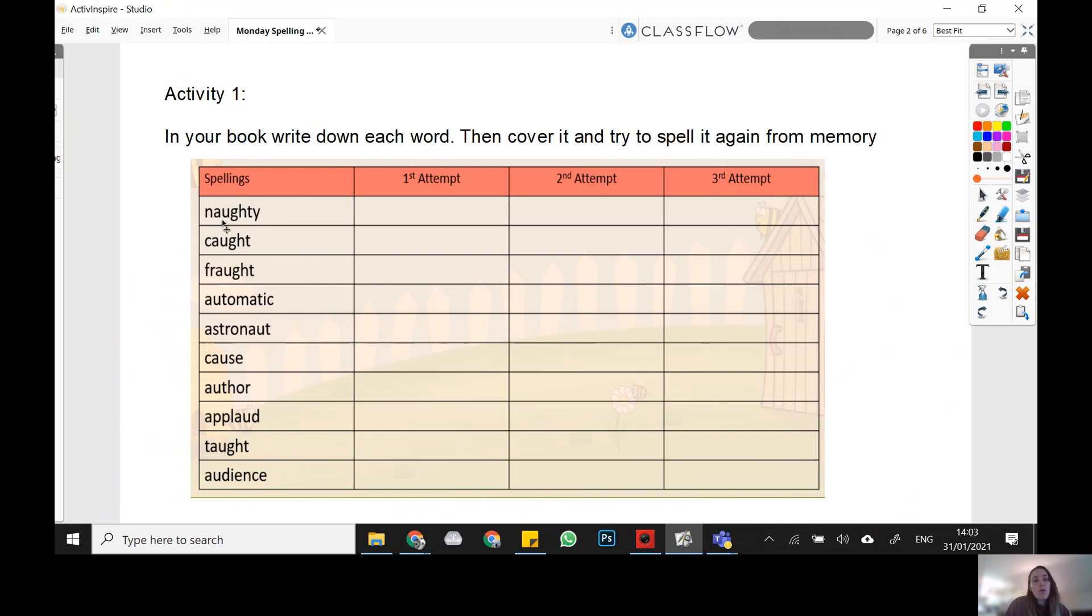You'll notice actually that each of these words has that 'or' sound, a-u, or sound. So that's what we'll be focusing on there. Right, so pause the video now, write down those words, cover it, and attempt to spell it without looking. When you're ready for the next activity, come back and press play.